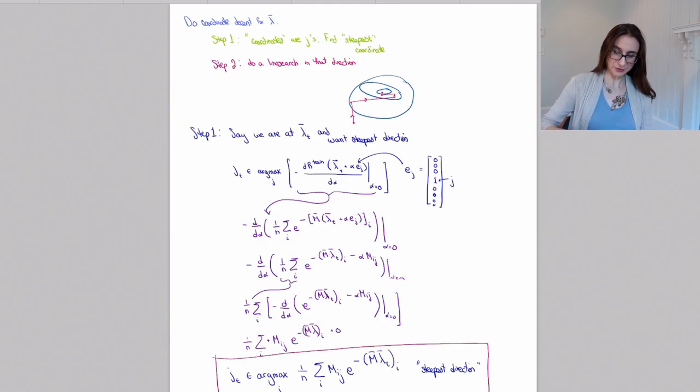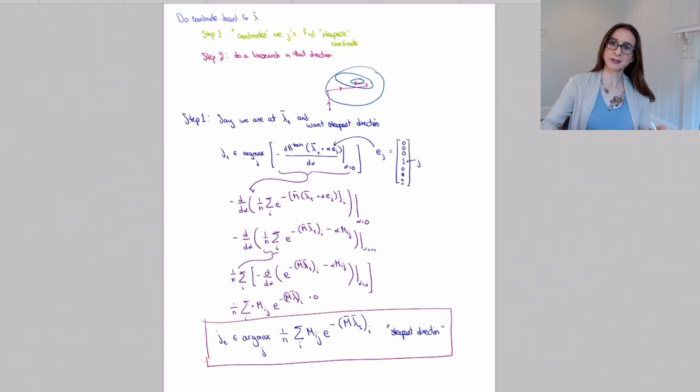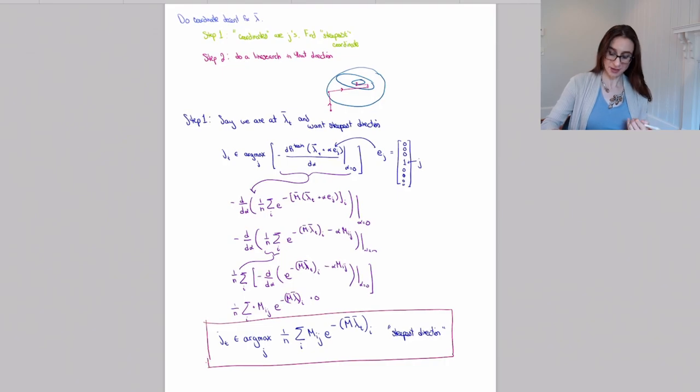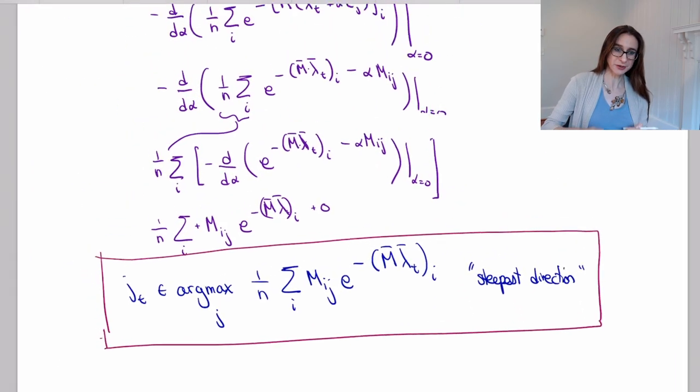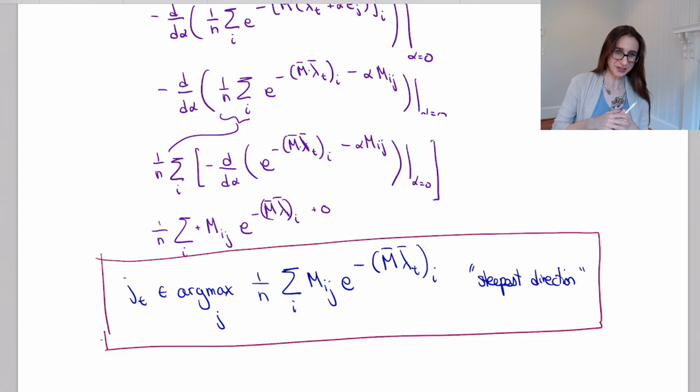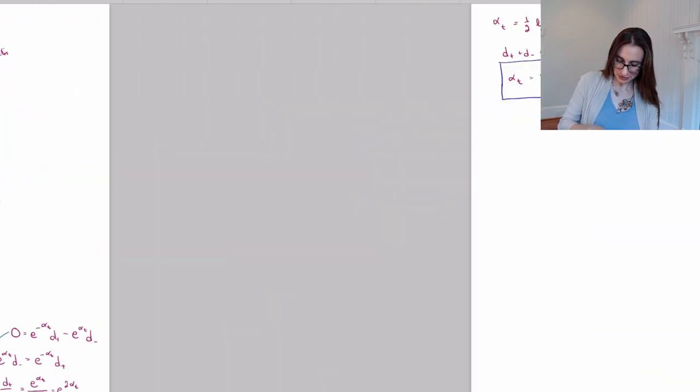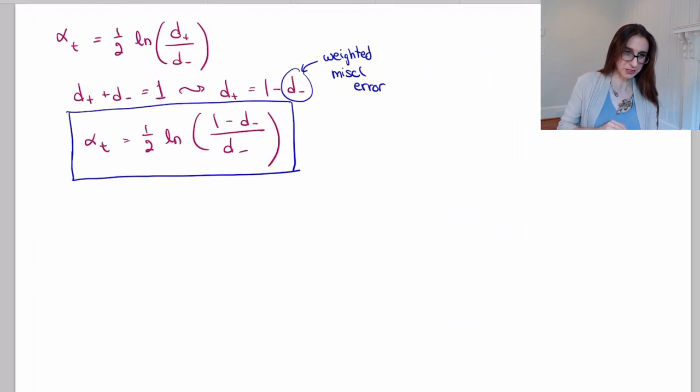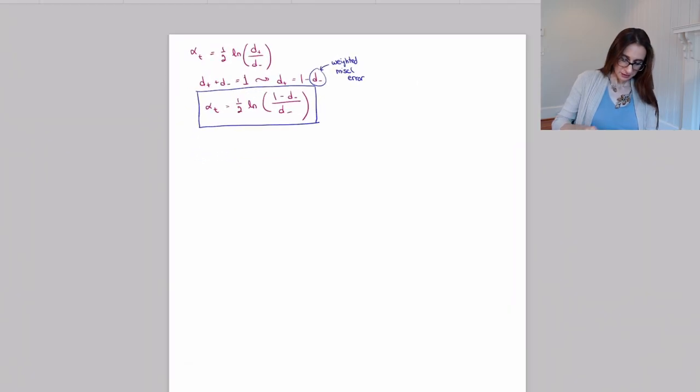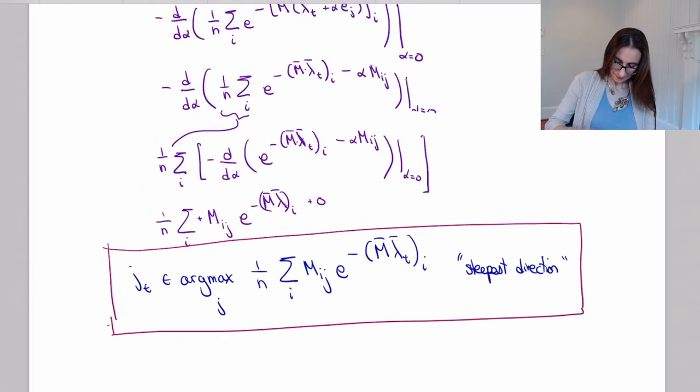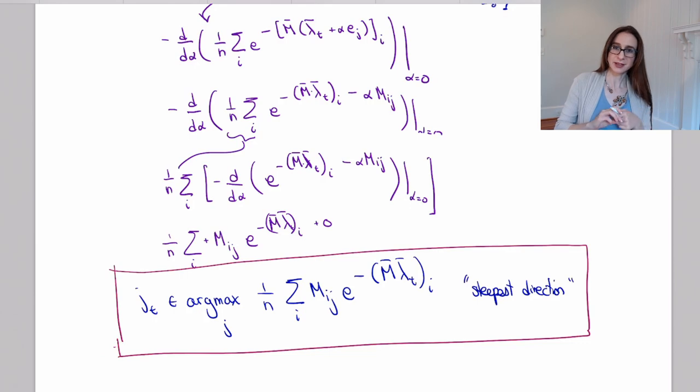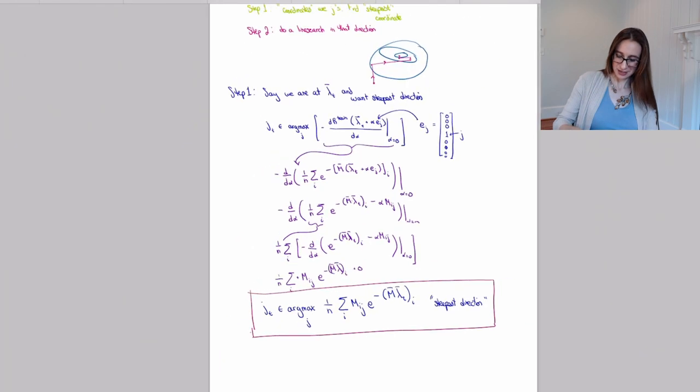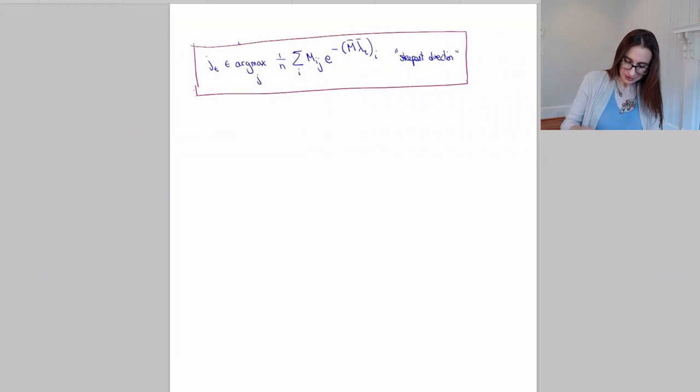We've been working on coordinate descent for AdaBoost and we've already done the two major calculations. The first one where we had to figure out what direction to travel in, and then we had to figure out how far to travel in that direction, which is the formula here. Now I want to simplify this calculation so that we'll get closer to what you think of as AdaBoost.